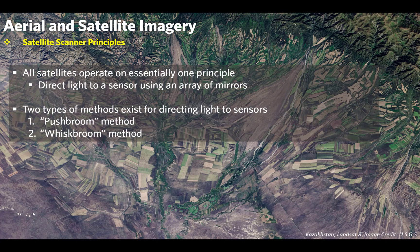To begin with, some satellite scanner principles. All satellites generally operate on essentially one principle: reflected energy coming from the surface of the Earth is directed through a series of lenses and mirrors on board a satellite platform. These lenses and mirrors direct this incoming energy to a sensor array. There are a couple of different types of ways that the mirrors and lenses work.